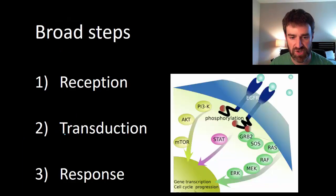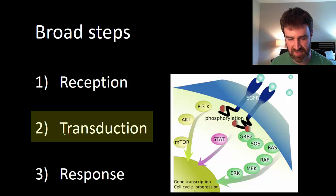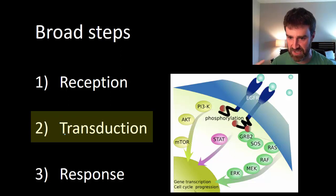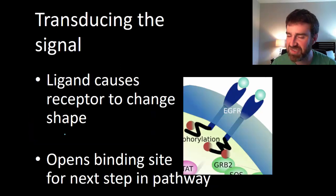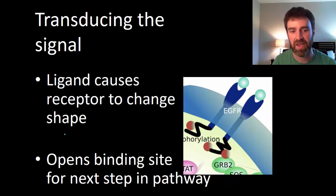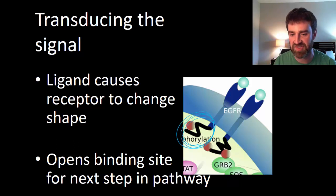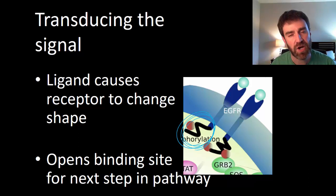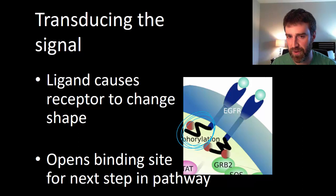Step two is transduction — to transduce something simply means to convert it from one form to another. What we're converting here is an external signal into a change in internal cell activity. The first thing that must happen is the ligand binding causes the receptor to change shape. For a membrane receptor, it changes shape inside the cell, opening a new binding site so the next step in the pathway can be activated. We're almost always talking about proteins being activated throughout this transduction pathway.